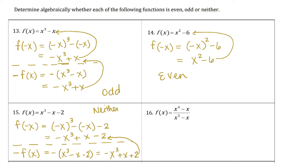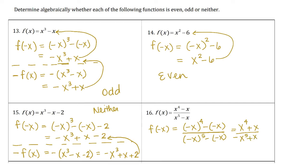For number 16, we find f(−x): we have (−x)⁴ − (−x) all over (−x)⁵ − (−x). Simplifying, the numerator becomes x⁴ + x and the denominator becomes −x⁵ + x. We did not get the original back, so it is not even. Checking the opposite of the original by multiplying every term by negative, we get −x⁴ − x over negative x⁵ + x — which matches what we found for f(−x). So this function is odd.